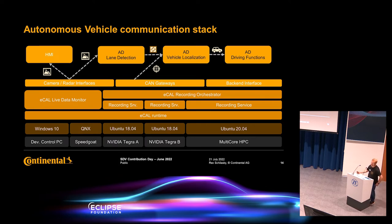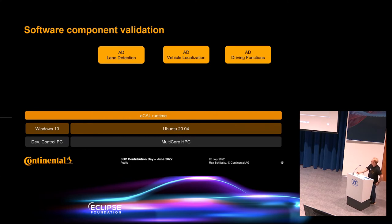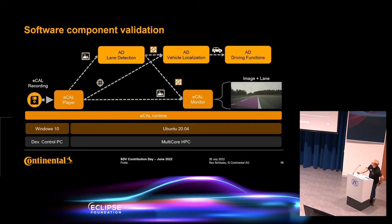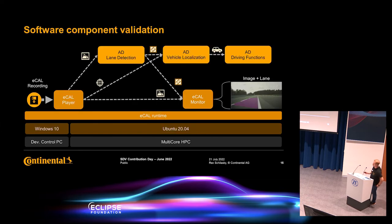A typical use case is driving your car at a test center, making recordings, and then validating your software components. This is quite simple — you can take another machine or run everything on one machine. You deploy your software components on a single machine and use the eCal player, as a command line or GUI application, to load the distributed recording collected by the recorder into one large HDF5 dataset and stimulate the software components. For example, an image and GPS position are published, lane detection creates a lane, which is sent to the localization module for precise localization for driving functions. You can also start the eCal Monitor to subscribe and visualize all this information via specific plugins.